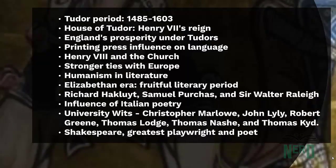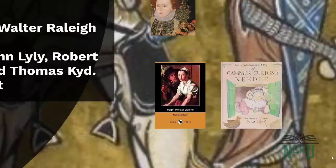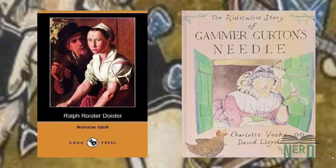Tudor drama was influenced by medieval morality plays and classical models. Ralph Roister Doister by Nicholas Udall and Gammer Gurton's Needle are considered the first English comedies, combining elements of classical Roman comedy with native burlesque.